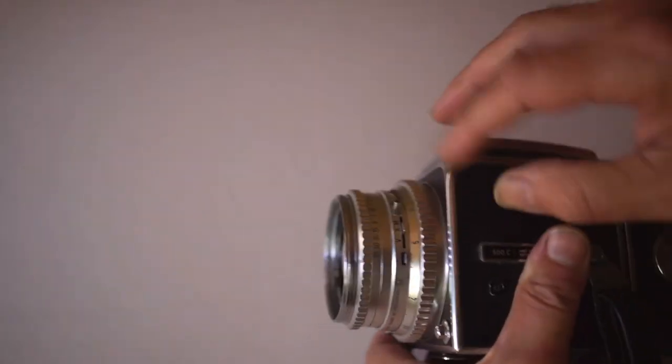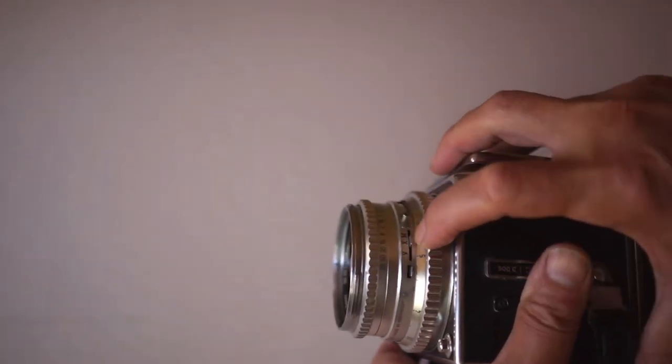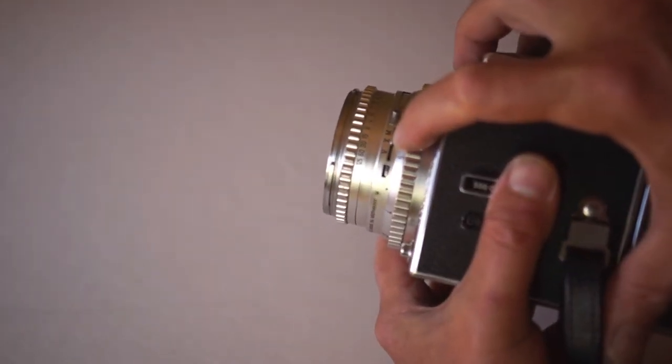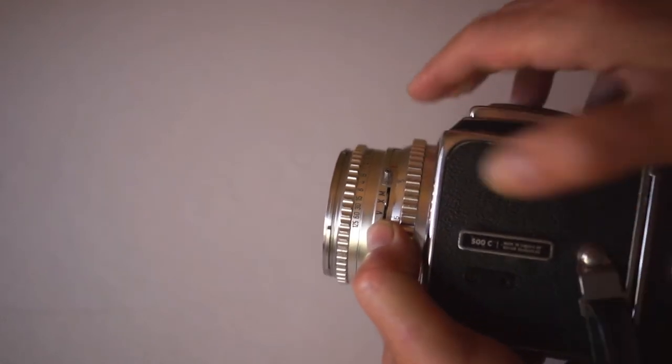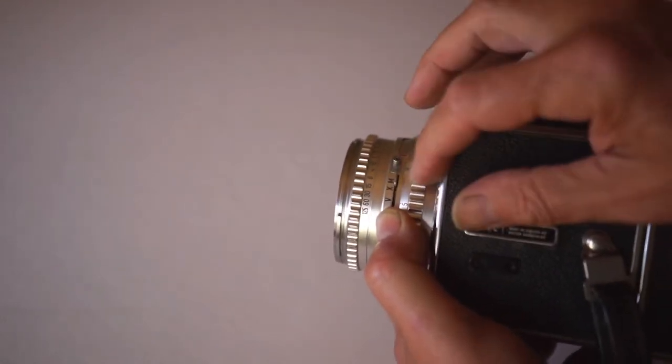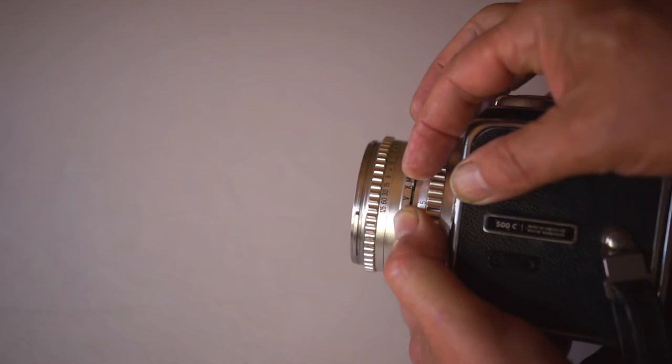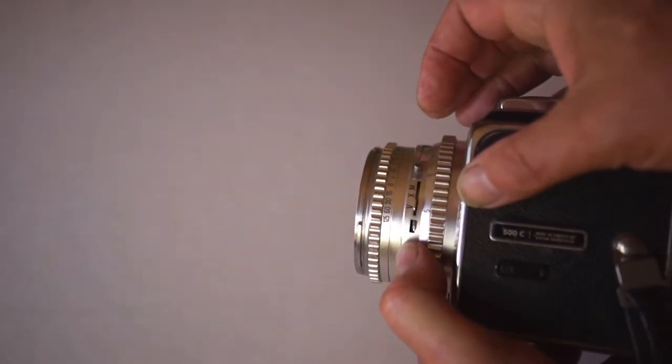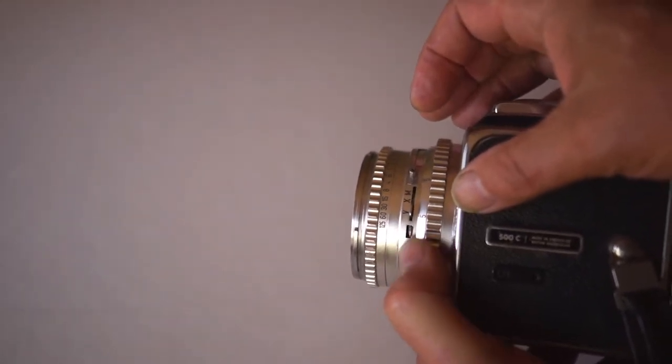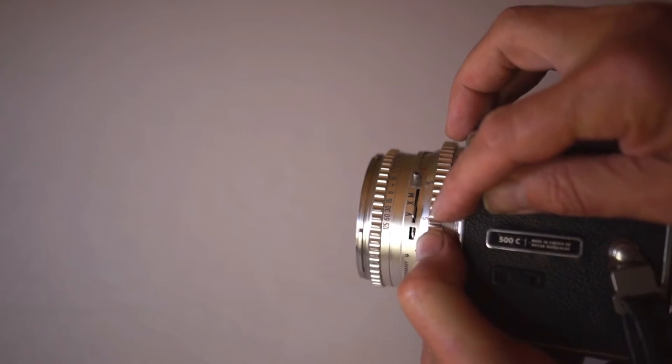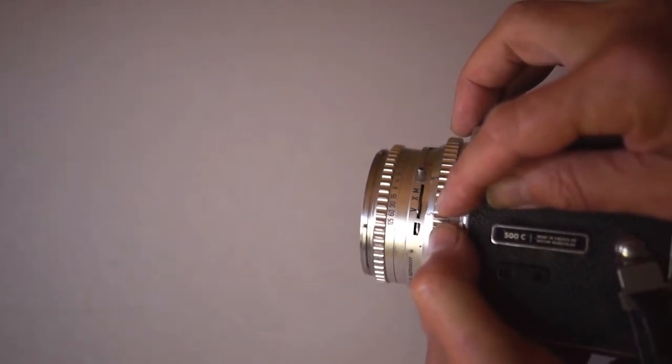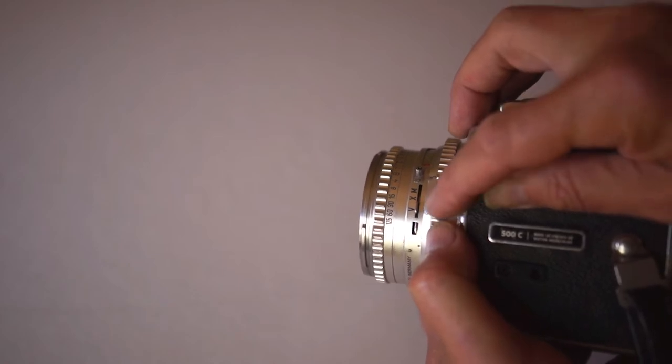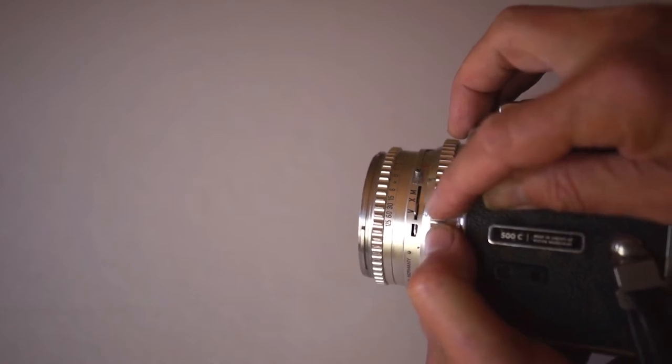On this side, this is shutter sync. If you're shooting with flash, it's very important that this is on X sync. To change that, you push up on this and move it over. The M is for flash bulbs. The V setting is for a self-timer, and I would not recommend using that because it usually makes the shutter hang up and it's real easy to jam the camera using the V self-portrait setting.